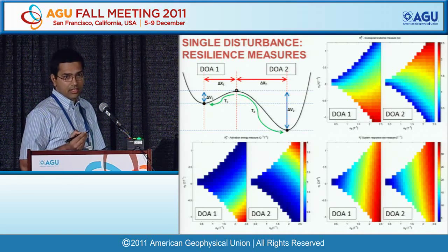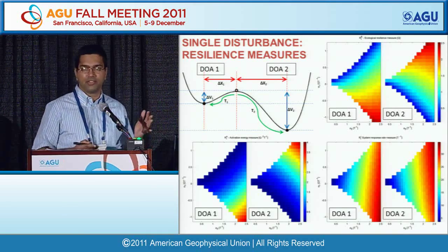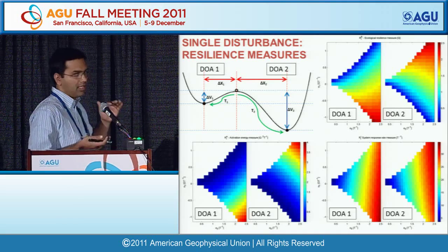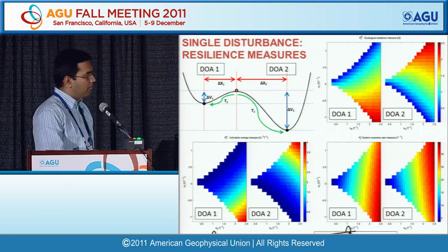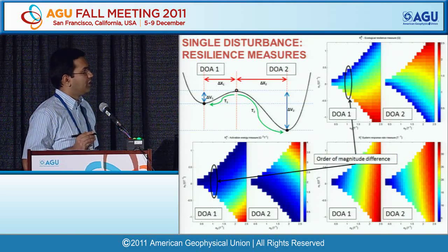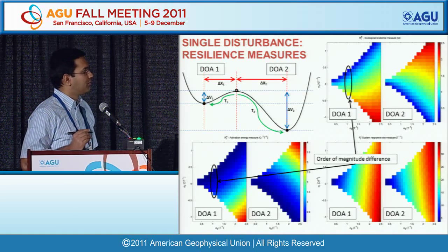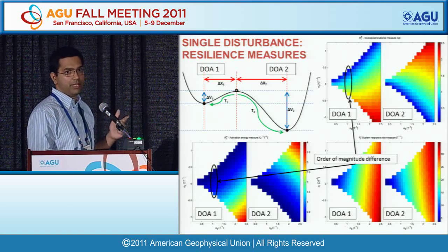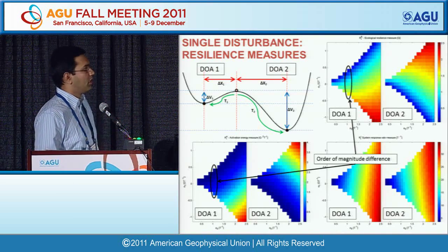A second type of resilience measure is how much energy it takes in terms of activation — analogous to activation energy in chemical kinetics. The system may be far from the unstable point, but the potential well may be very shallow. If you spend a lot of resources changing deforestation to reforestation, you may significantly increase the ecological resilience by separating the distances, but the activation energy may remain very small. So the well is still shallow despite the greater separation. It depends on what choice you want to make in order to effectively accomplish your goal.